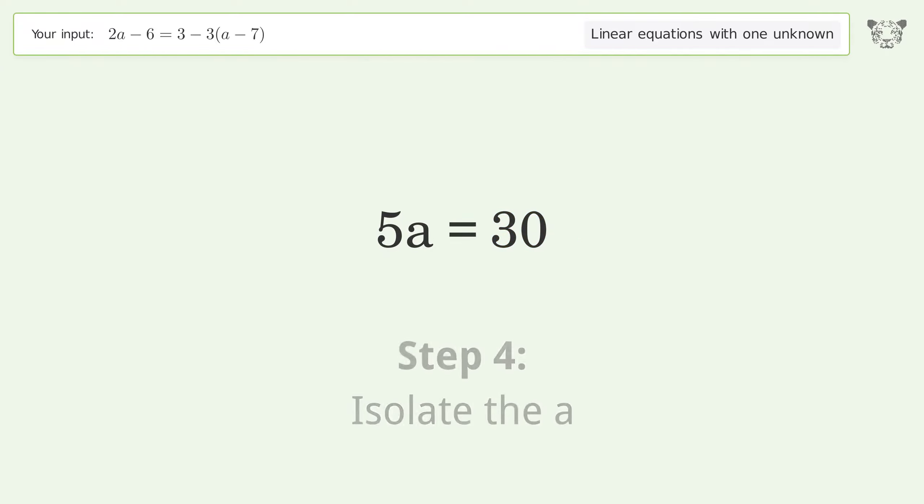To isolate the a, divide both sides by five. Simplify the fraction.